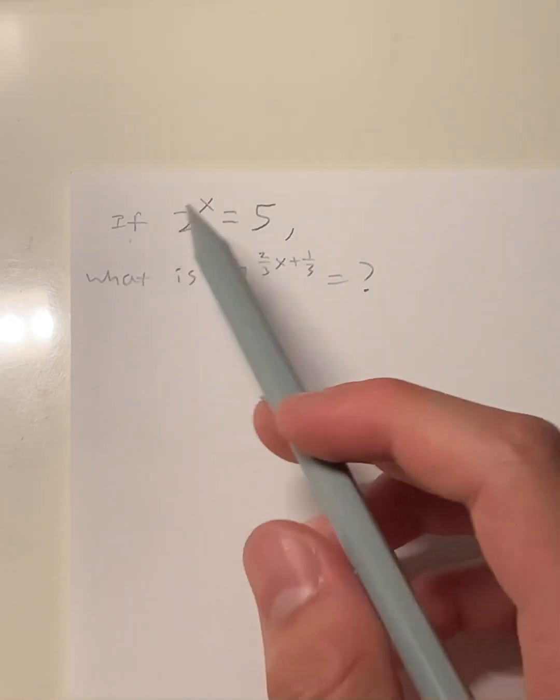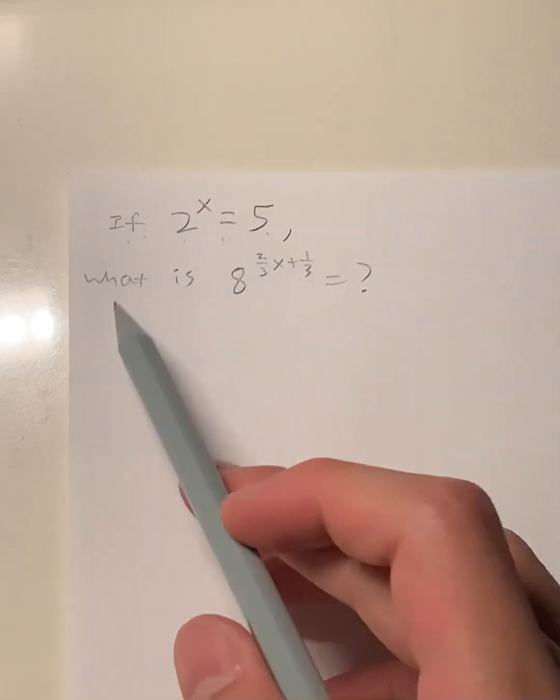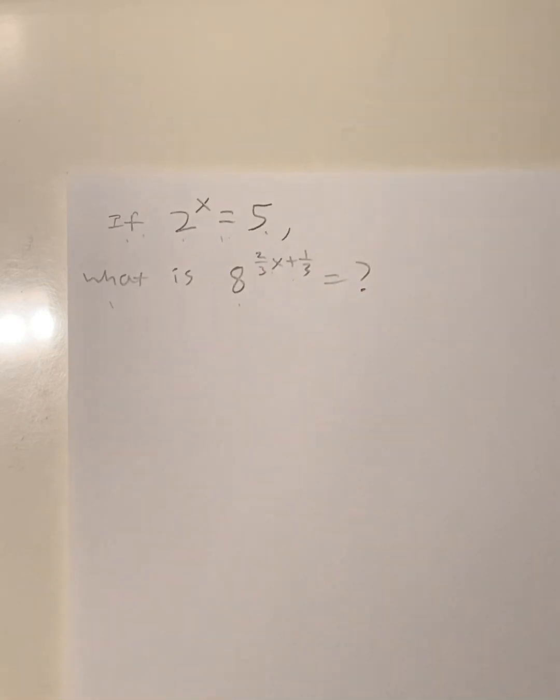So we have the question, if 2^x = 5, what is 8^(2x/3 + 1/3)? What most of you might try to do is solve for x, which is possible, but then x is going to give you some random number that you probably can't figure out without a calculator. So let me show you how to do it without a calculator.